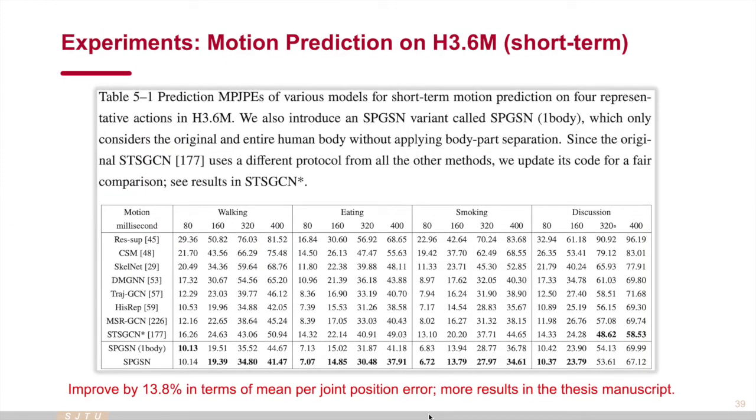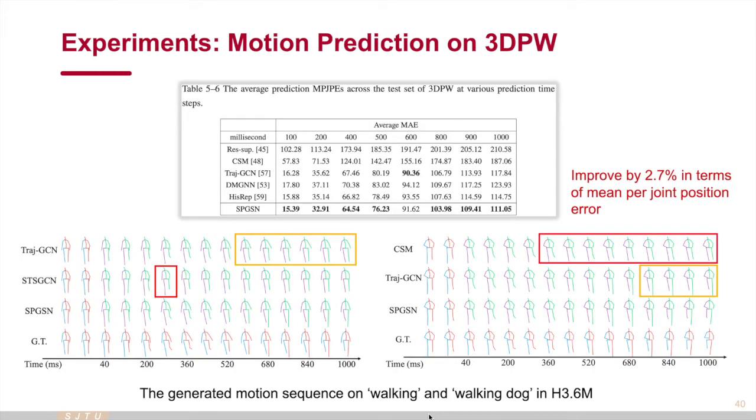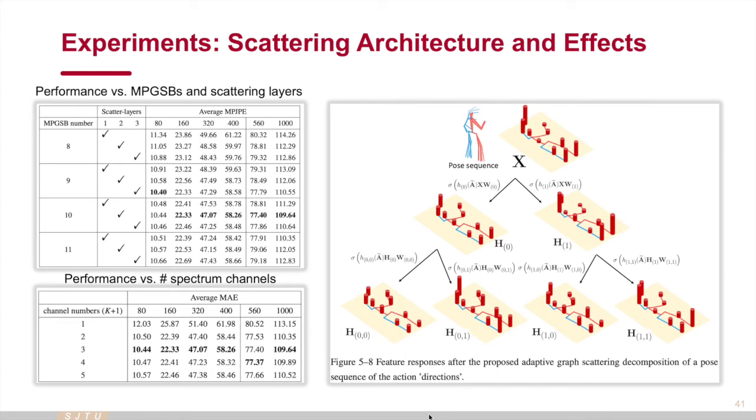We conduct experiments on three large-scale datasets and achieve superior prediction performance compared to previous methods. We change the number of graph scattering layers, scattering channels, and network blocks to find the optimal model architecture. We visualize the pose features. After the low-path graph convolution, all the features tend to be similar and smooth. With other band-path filters, the differences between the nodes are enhanced.